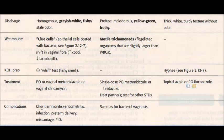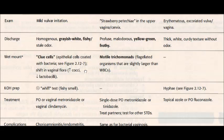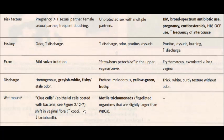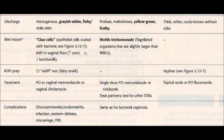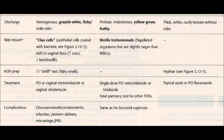Complications of bacterial vaginosis include chorioamnionitis — inflammation of the placental and amniotic layers — endometritis, preterm delivery, miscarriage, and pelvic inflammatory disease. Pregnancy was already noted as a risk factor, explaining why preterm delivery is a complication. Complications of trichomonas are similar to those of bacterial vaginosis.